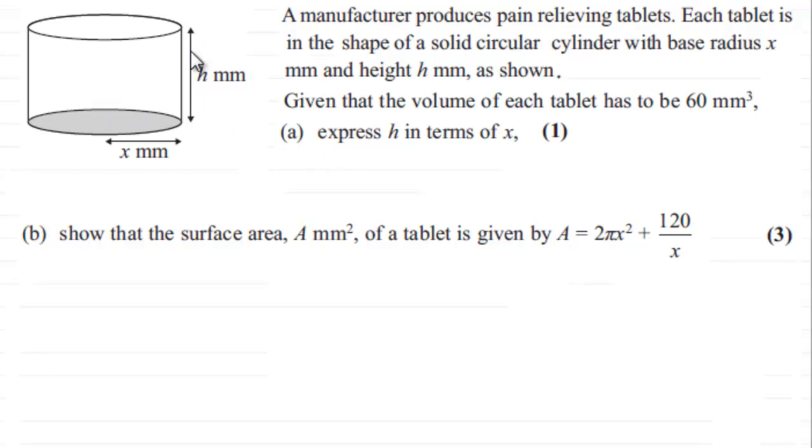In the first part we've got to express h in terms of x. And then we've got to show that the surface area A millimeter squared of a tablet is given by this formula here: A equals 2πx² plus 120 over x.